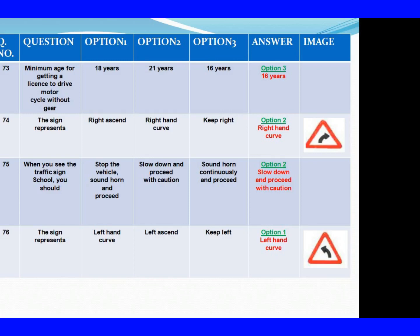Question 74: The sign represents. Option 1: Right ascent. Option 2: Right hand curve. Option 3: Keep right. The right answer is Option 2: Right hand curve. Question 75: When you see the traffic sign, you should. Option 1: Stop the vehicle, sound horn and proceed. Option 2: Slow down and proceed with caution. Option 3: Sound horn continuously and proceed. The right answer is Option 2: Slow down and proceed with caution.